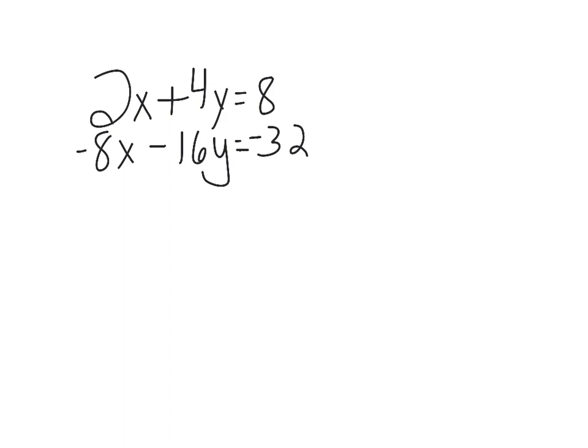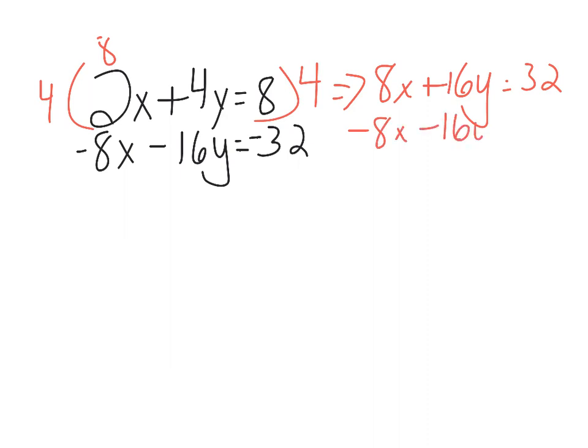So since the bottom equation is already negative eight, I need this to be an eight. So I would have to multiply the entire equation by four. So I would have eight x plus sixteen y equals thirty-two. Bring the other one over. Negative eight x minus sixteen y equals negative thirty-two.